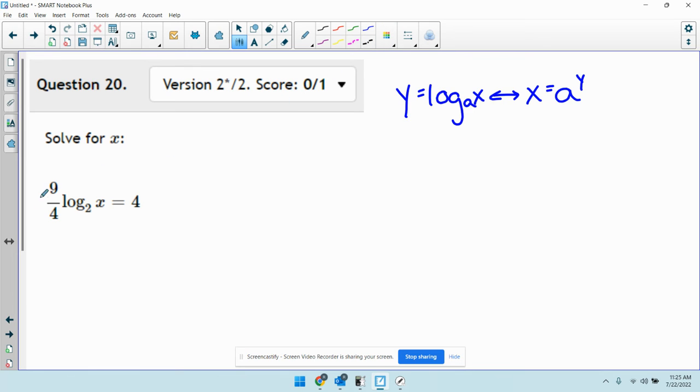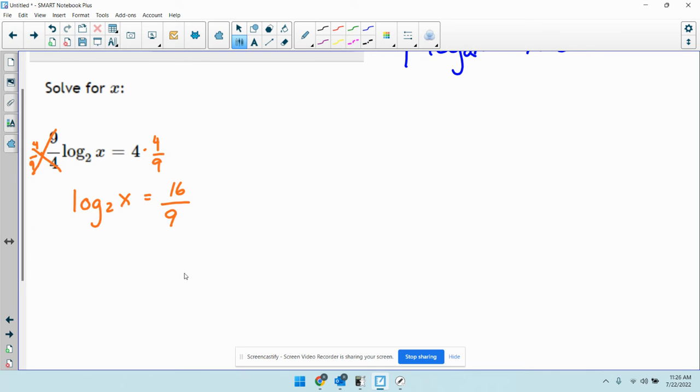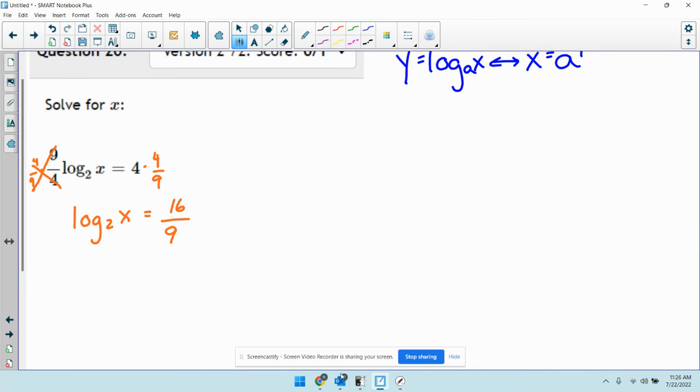So before I can convert, I want to get the log by itself. I need there to be nothing in front of the log. So I'm going to get rid of this 9 fourths by multiplying by the reciprocal. I'll multiply both sides by 4 over 9. So these cross out. I'm left with log base 2 of x equals 16 over 9. Just 4 times 4 ninths.